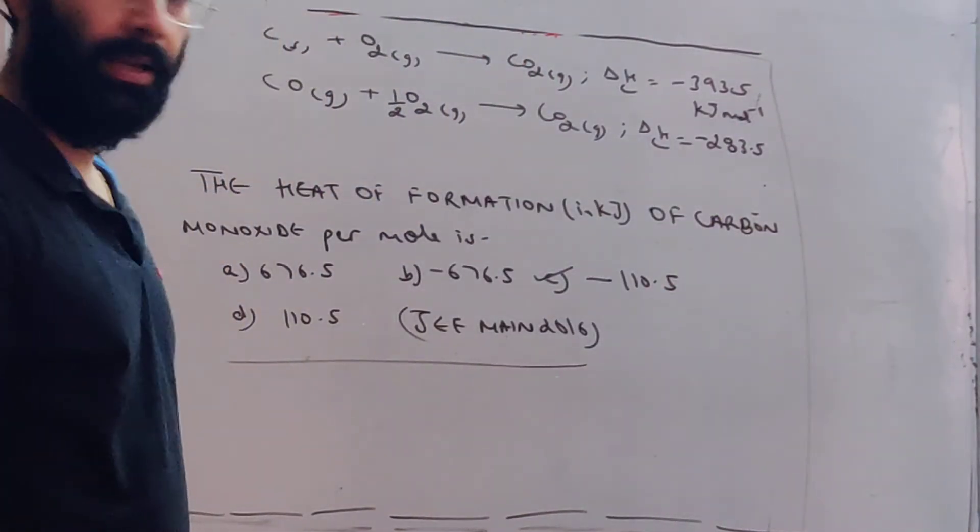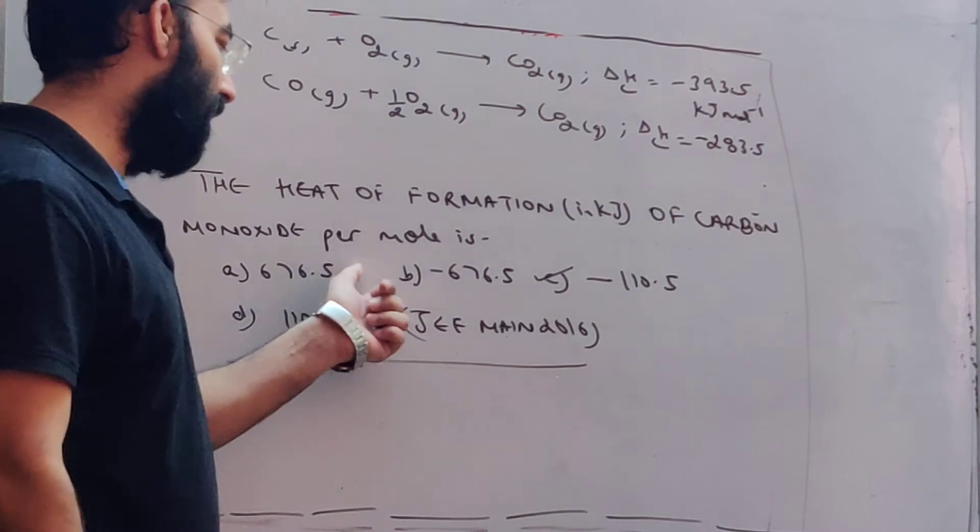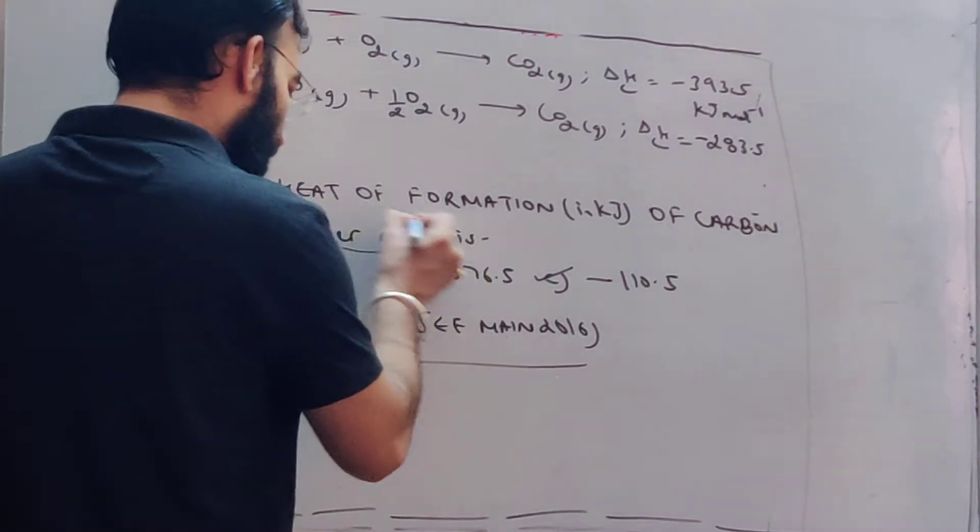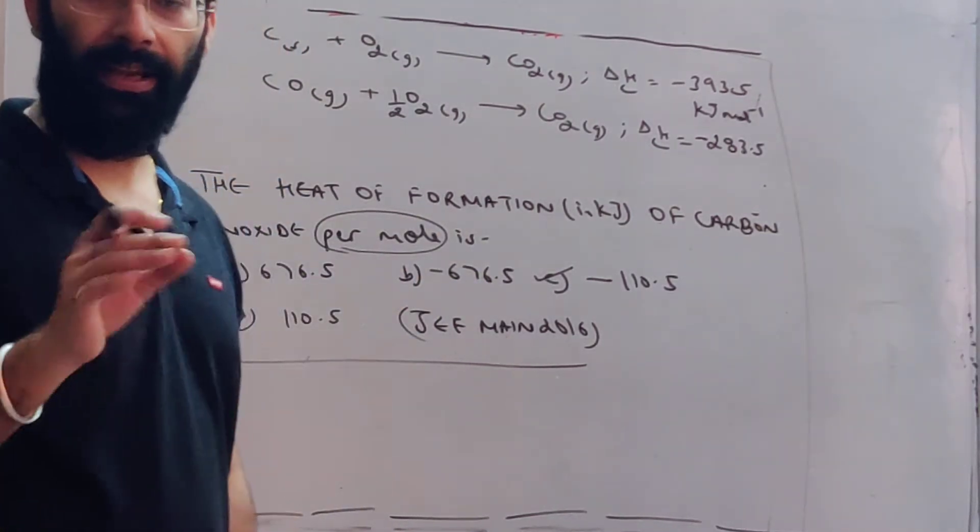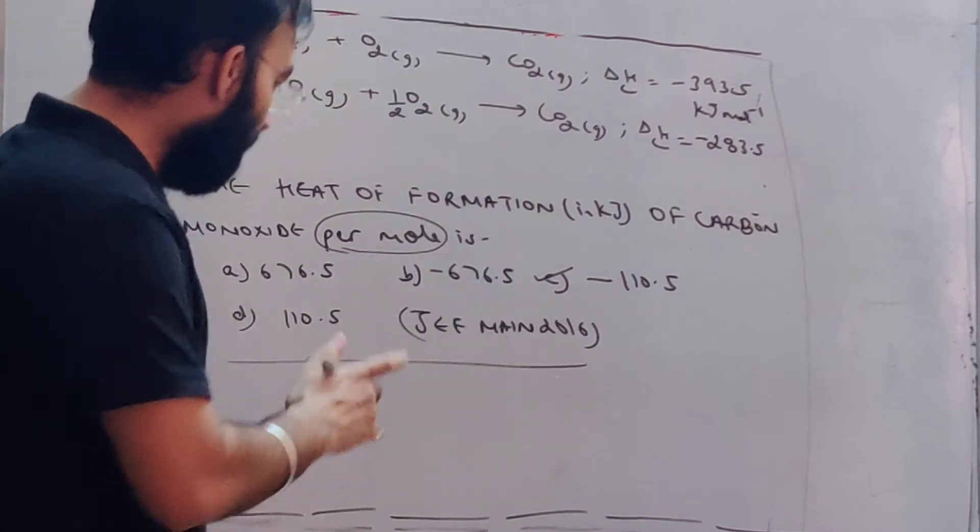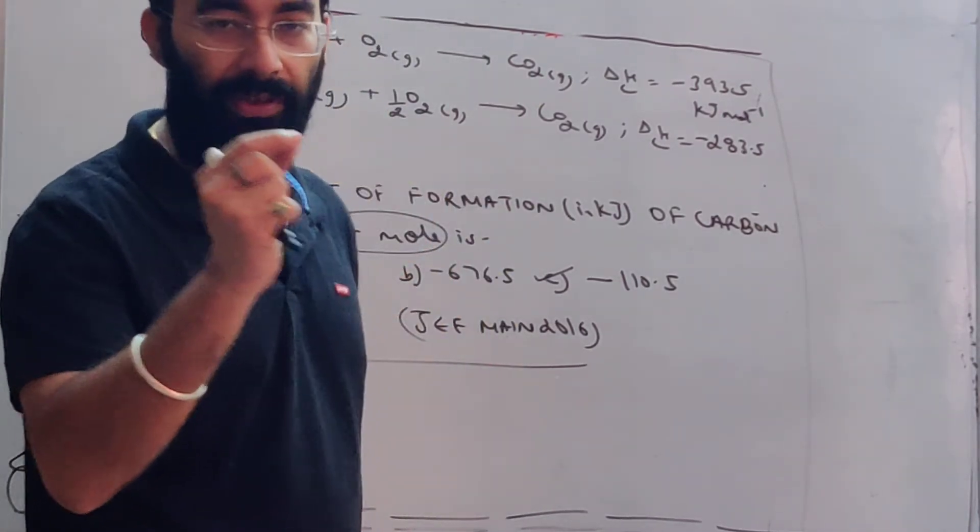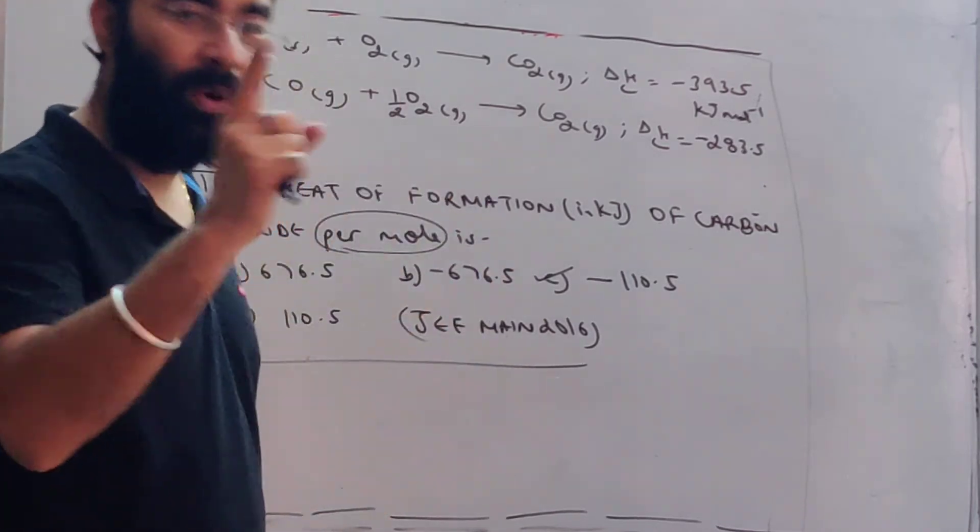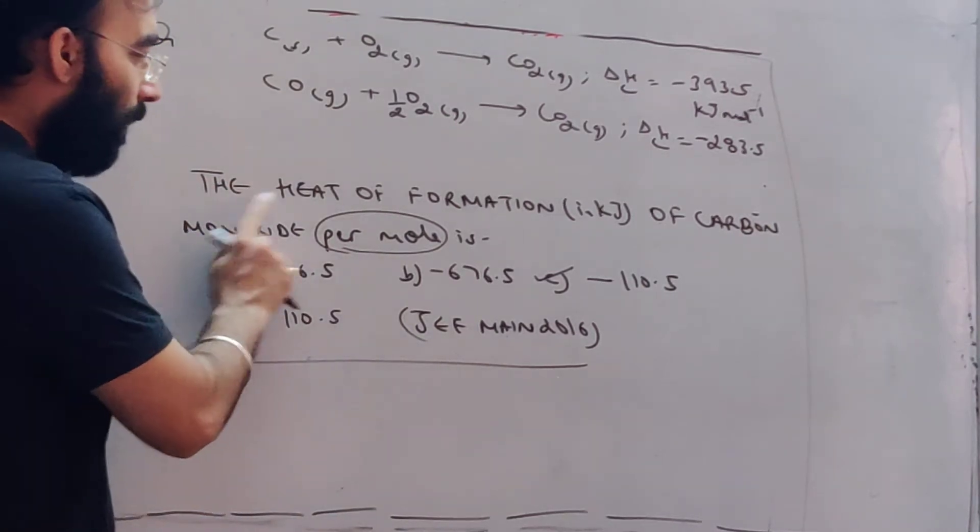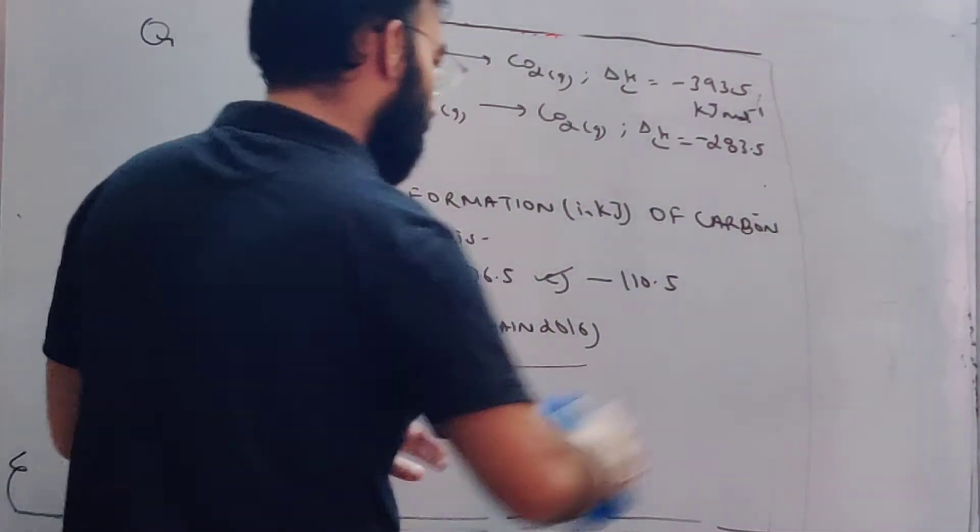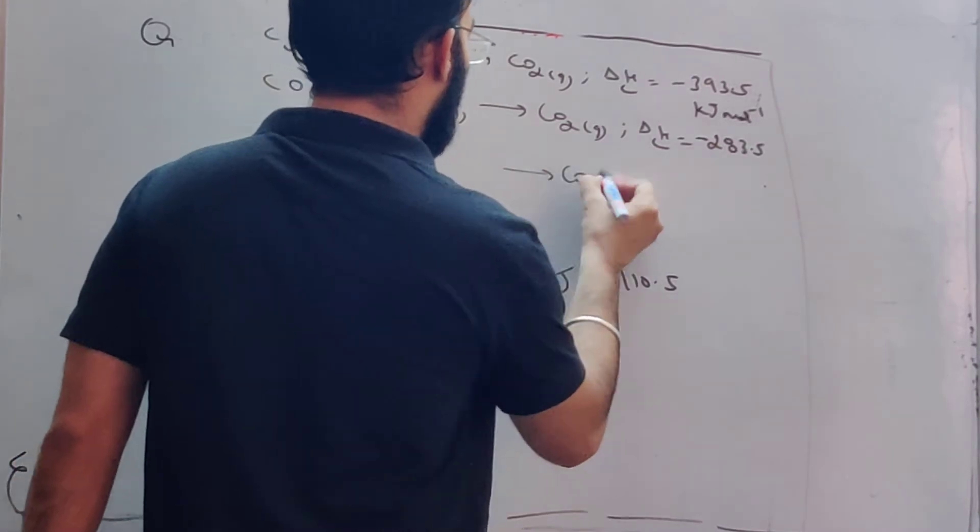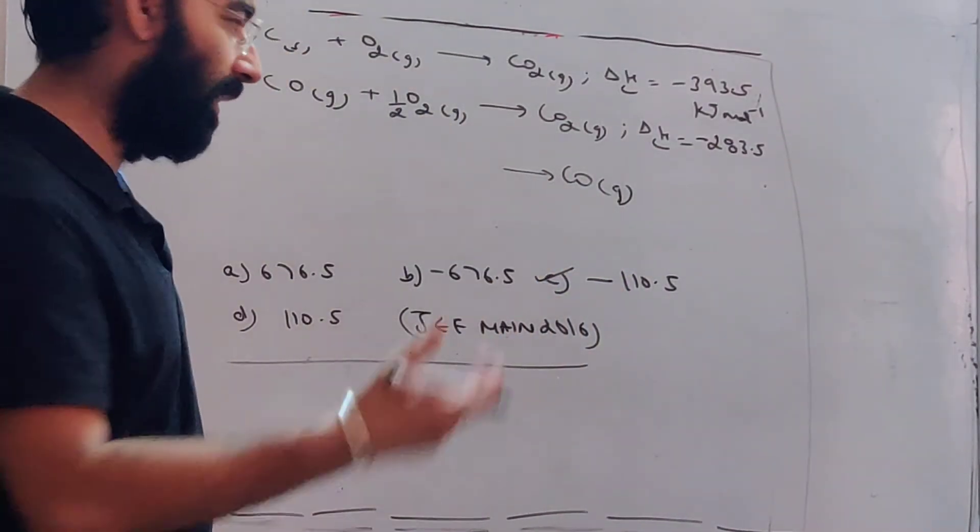Now, the question is demanding the heat of formation of carbon monoxide per mole. The heat of formation is defined for one mole. So, carbon monoxide will be made for one mole.